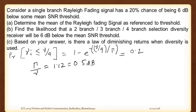We will finish off the syllabus most probably by today. First, we will start with the numerical we did last day. This is where we ended our discussion - the question was considering a single branch Rayleigh fading signal which is having 20% chance of being 6 dB below some mean SNR threshold.